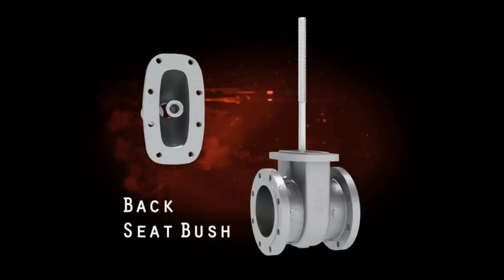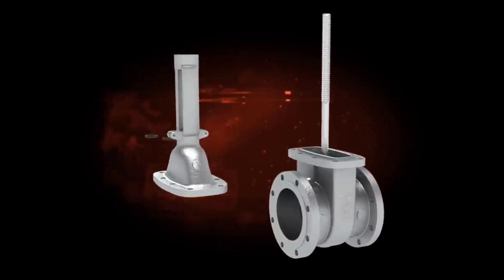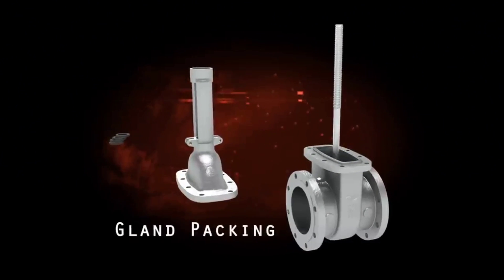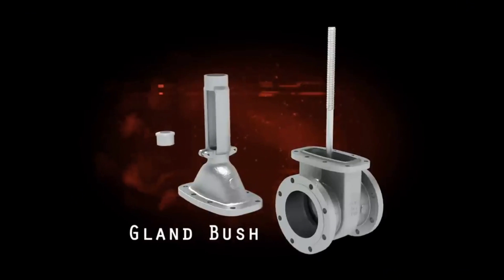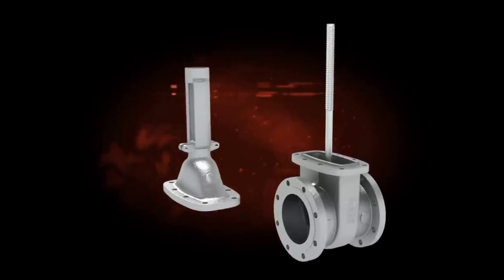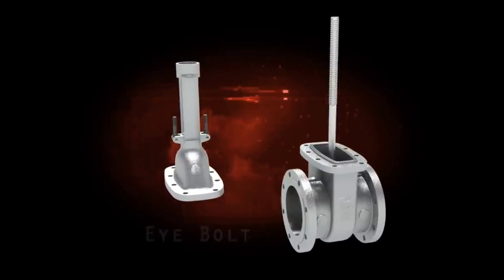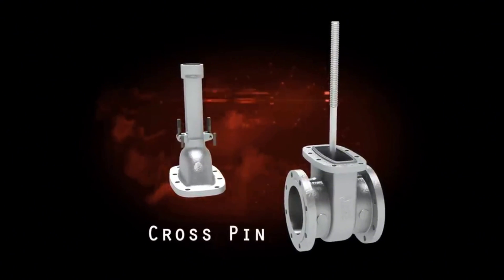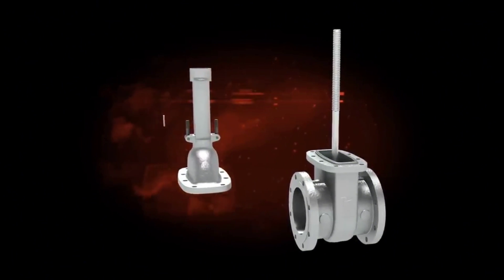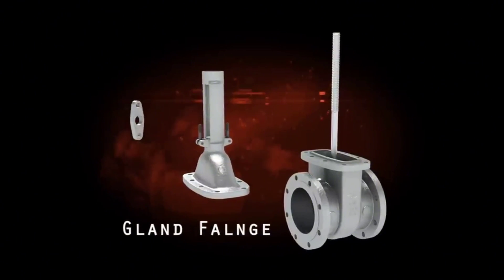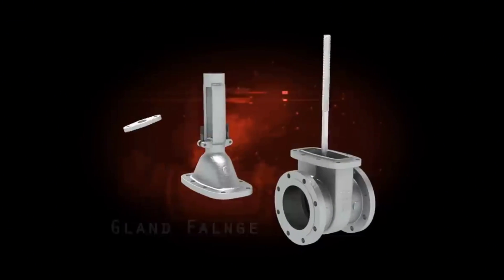The gate valve's bonnet consists of: back seat bush, gland packing, gland bush, eye bolt, cross pin, gland flange, and eye bolt nut.